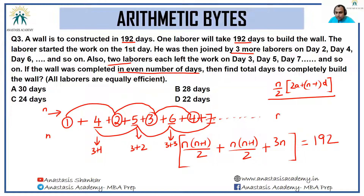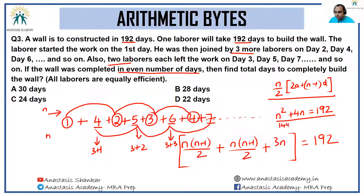This gives me n² + 4n = 192. Now plug in values to check: n=14 gives n² already greater than 192. n=13 gives n² odd and 4n even, so the result won't be even. The next value to check is n=12: 144 + 48 = 192. Yes, this is indeed equal to 192. So there are 12 terms in each series, meaning 24 days in total. The answer is option C, 24 days.